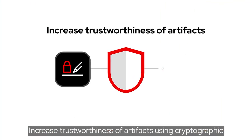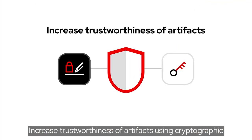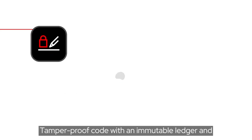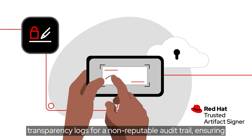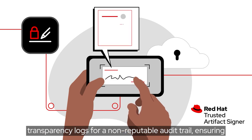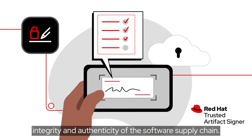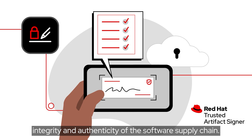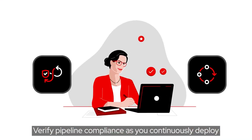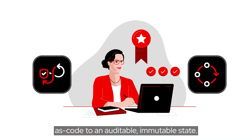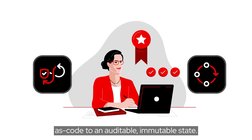Increase trustworthiness of artifacts using cryptographic signing and a keyless certificate authority. Tamper-proof code with an immutable ledger and transparency logs for a non-reputable audit trail, ensuring integrity and authenticity of the software supply chain. Verify pipeline compliance as you continuously deploy as code to an auditable, immutable state.